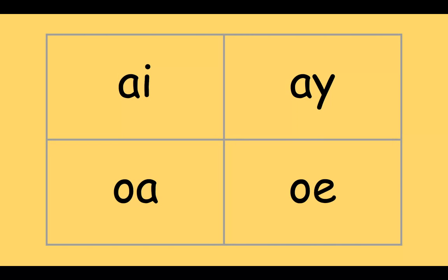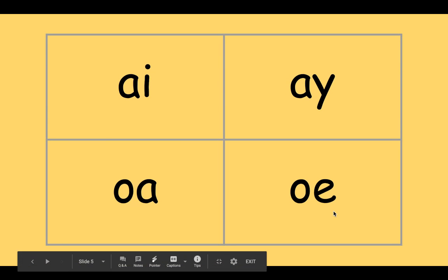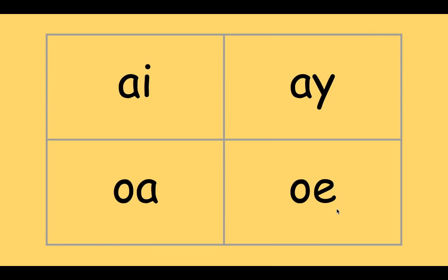First word: 'goal.' I will score a goal. That's OA—I hear O right in the middle. Next word: 'hoe.' I will use a hoe in my garden. That's OE—it comes at the end. Next word: 'clay.' That's AY—I hear A right at the end.